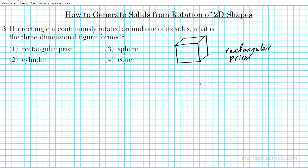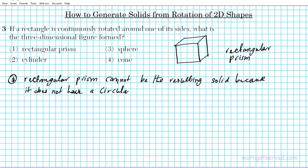All right, so you can never get this as a result because it does not have a circular outline. So option one is not the answer. Rectangular prism cannot be the resulting solid. Why? It does not have a circular outline. Why are we talking about circular outlines? Because we're talking about rotation. If you rotate any shape to create a solid, it's going to have a circular outline of some sort.